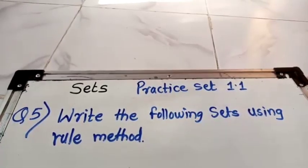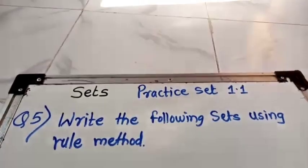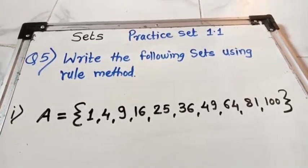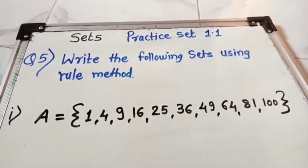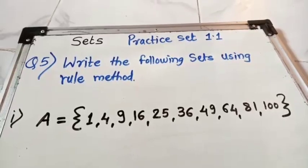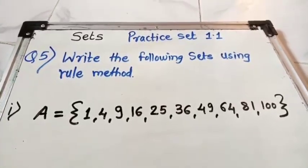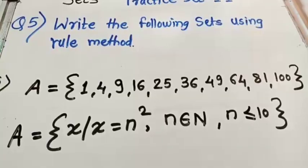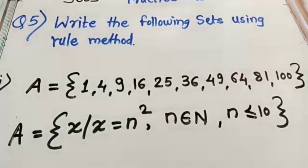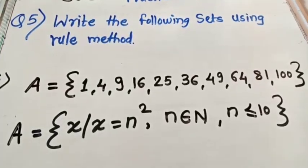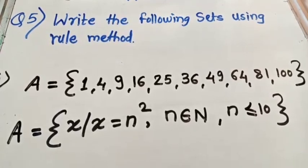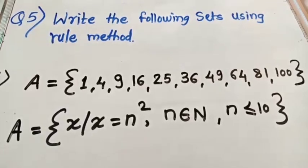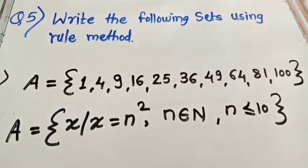Fifth question: write the following sets using rule method. First example: A = {1, 4, 9, 16, 25, 36, 49, 64, 81, 100} — these are perfect squares. In rule method: A = {x | x = n², n ∈ N, n ≤ 10}. You can also use n < 11.